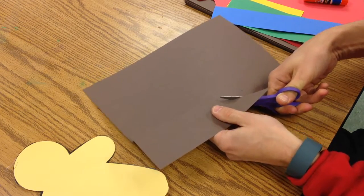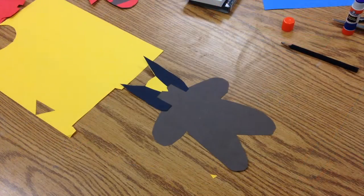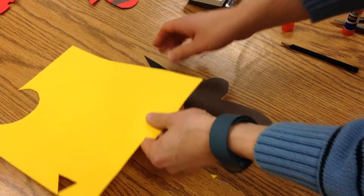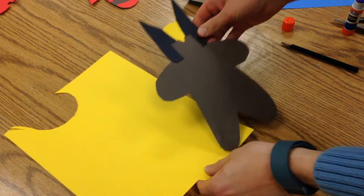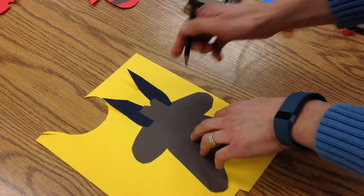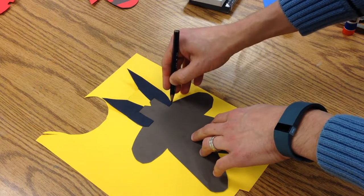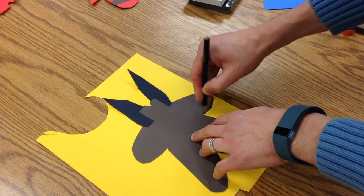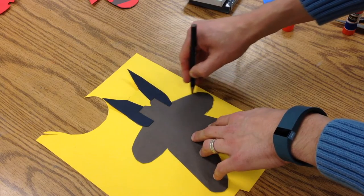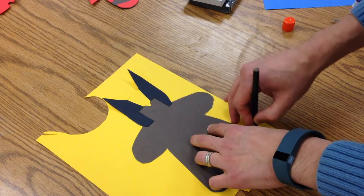Now the trick to making this shirt match the same size is I know that I want to have most of his suit be yellow. So I'm just going to go ahead and use the gingerbread man that I've got and just trace around it.